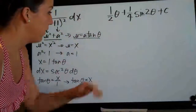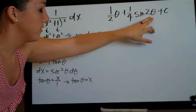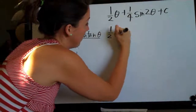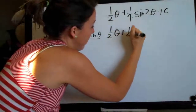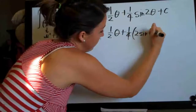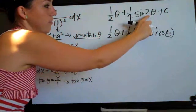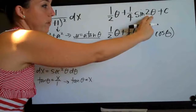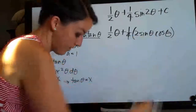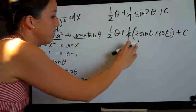We'll use the double angle formula for sine of 2 theta. Sine of 2 theta equals 2 times sine theta times cosine theta. That's a double angle formula because sine of 2 theta means twice the angle theta. So we get 2 sine theta cosine theta, plus C.